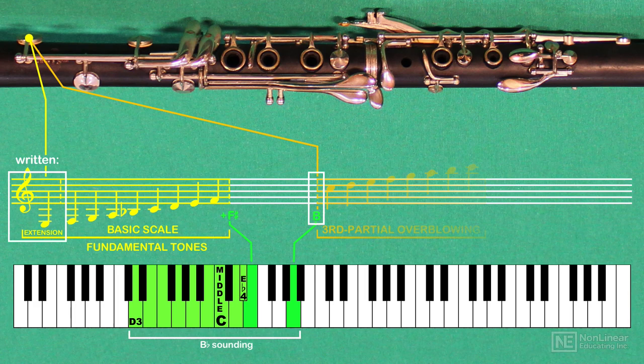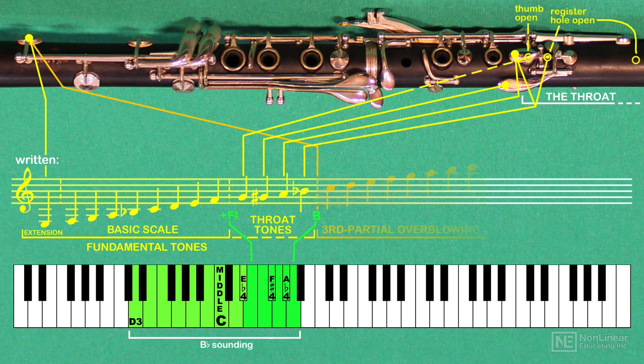Another improvement to the clarinet is the throat register, so called because the tone holes go past the midway point and up into the throat of the bore, actually getting quite close to the barrel joint. These tones close the gap between the top F of the fundamental scale and the bottom B of the next register up, but they have a shallower tone due to the shortness of resonant length.